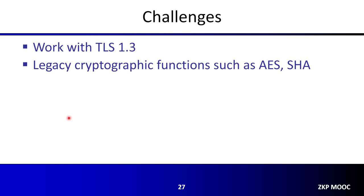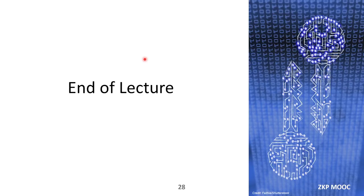The main challenges in this work come from the network protocol level. The protocol must be compatible with TLS 1.3 specifications and HTTPS, which means the zero-knowledge proof must support legacy cryptographic functions such as AES and SHA hash functions. You cannot use SNARK-friendly or circuit-friendly hash primitives because these are not standard and not compatible with TLS 1.3. The paper has many optimizations for these legacy cryptographic functions to make the entire system compatible with the existing TLS 1.3 standard.